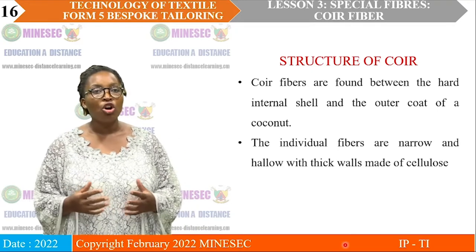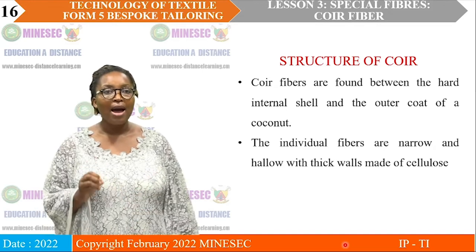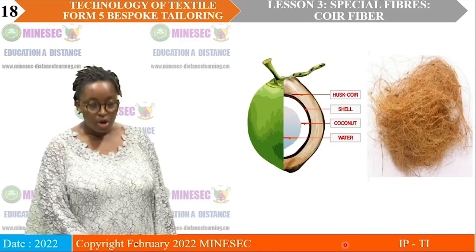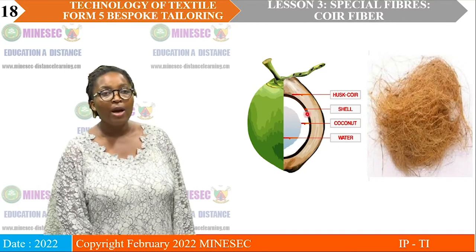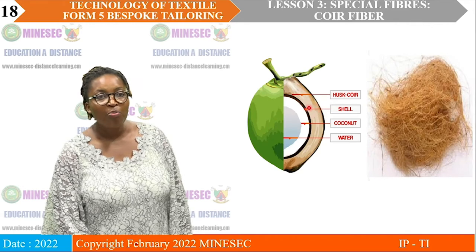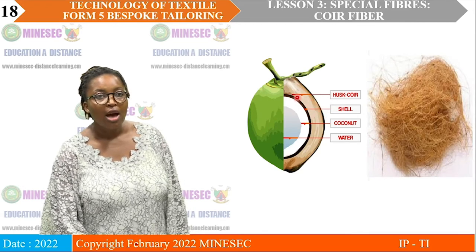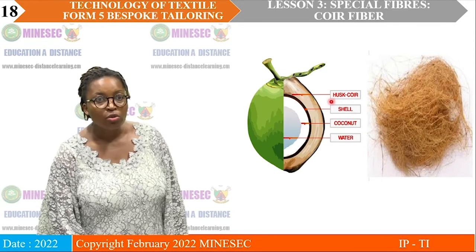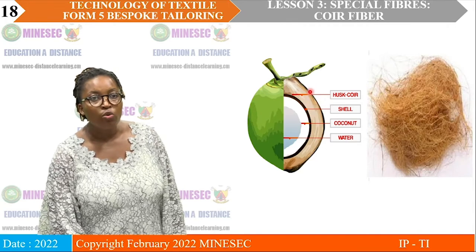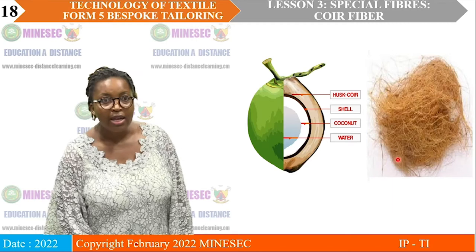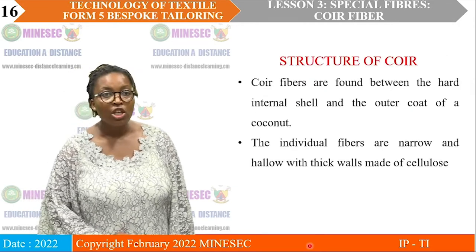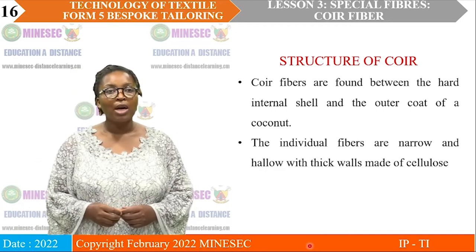Structure: Koi is found between the hard internal shell and the outer coat of the coconut. This is the coconut here — the Koi fiber is found between the inner hard shell and the outer coat. This is where we extract our coconut fiber. When we clean a coconut, we see the hard part; between the outer shell and the hard shell is where we have our coconut fiber. After extraction, this is how it looks.